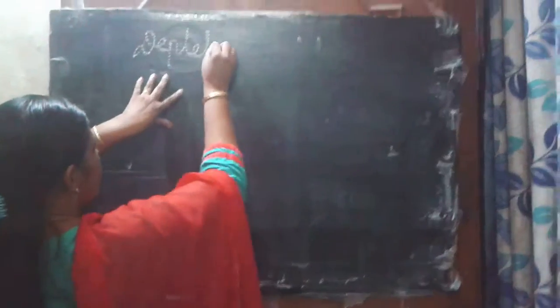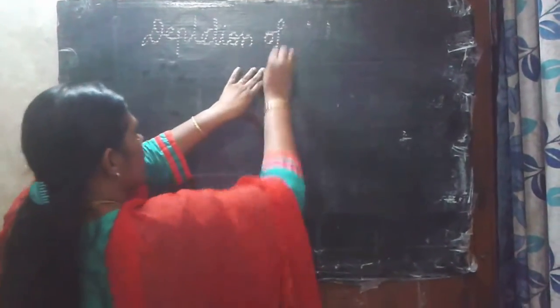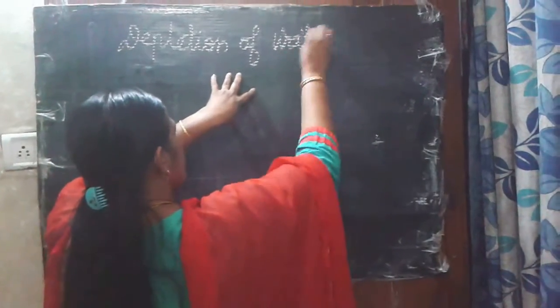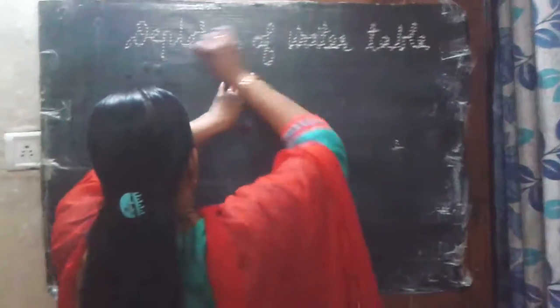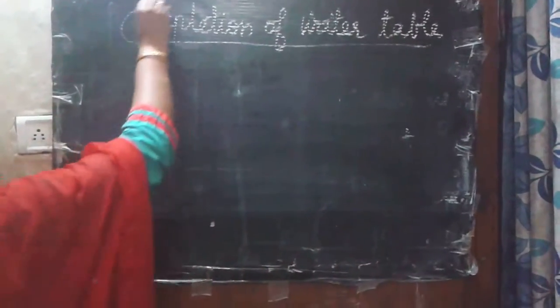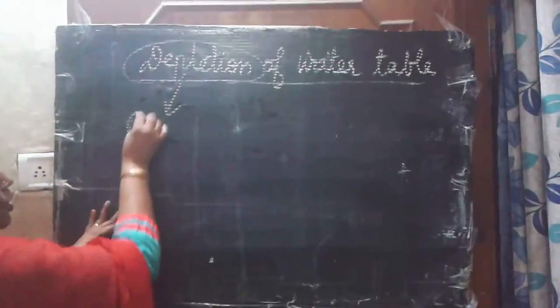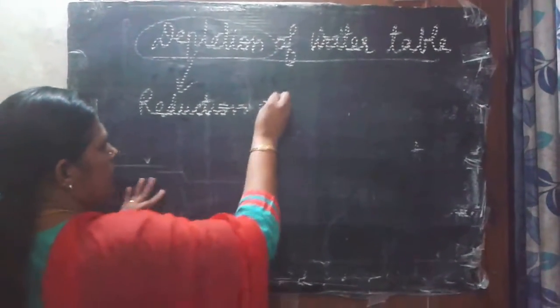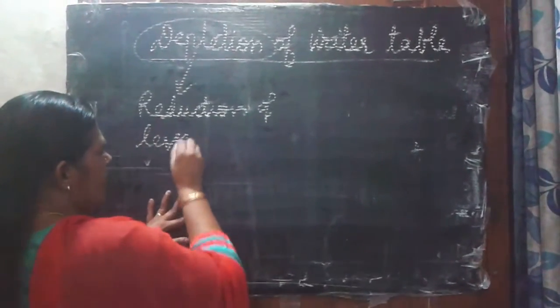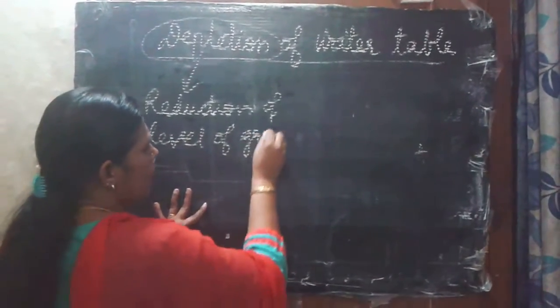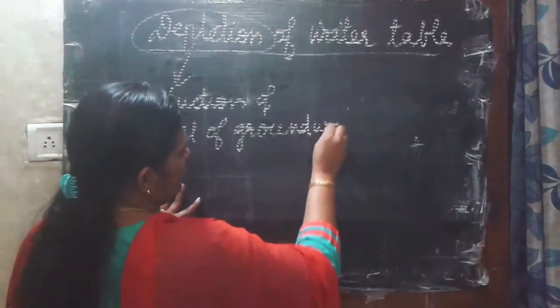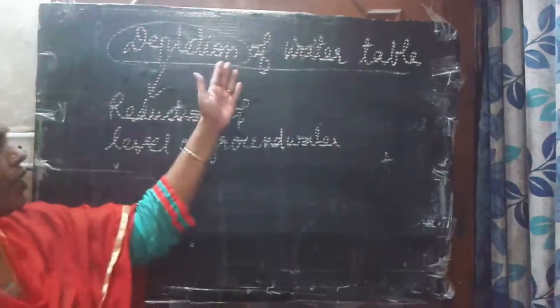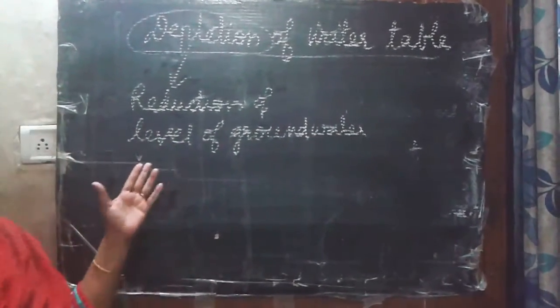We continue with the next topic: depletion of the water table. Depletion means there is a reduction of water — specifically, a reduction in the level of ground water. That is what depletion of the water table means.